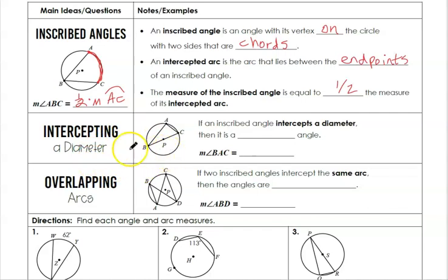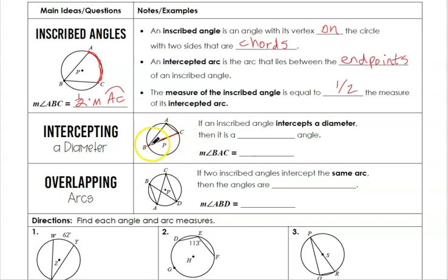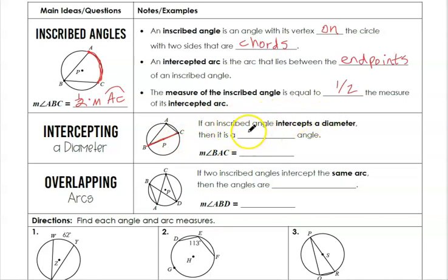Now we get to another important property involving an inscribed angle that intercepts a diameter. Think of it this way: one of the chords of the angle is actually the diameter. So we have an inscribed angle here, but notice that chord BC is actually also the diameter of the circle.